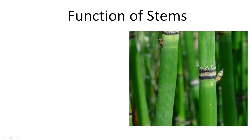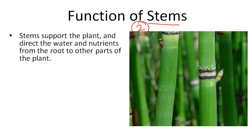Now let's talk about the function of stems. Stems are a very interesting structure in plants because they actually have two real roles. Stems support the plant and direct the water and nutrients from the root to other parts of the plant.